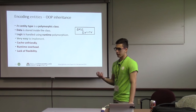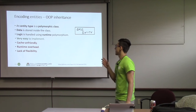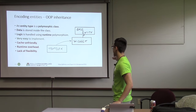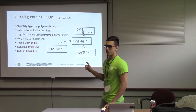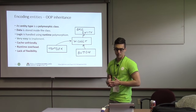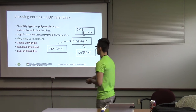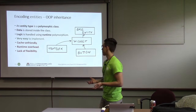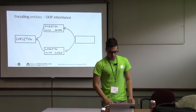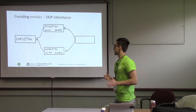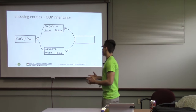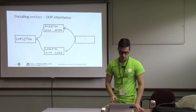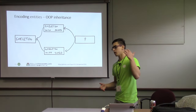We have various ways of encoding entities. The most primitive way, in my opinion, is object-oriented inheritance, where we create a hierarchy of classes. We have the base entity, then widget derives from it, then we add text box and button. This is very easy to implement, but it's not cache-friendly. You have runtime overhead because of virtual functions, and you lack flexibility. If we want a skeleton with both a sword and a shield, we get into the diamond problem with inheritance, which is pretty annoying.